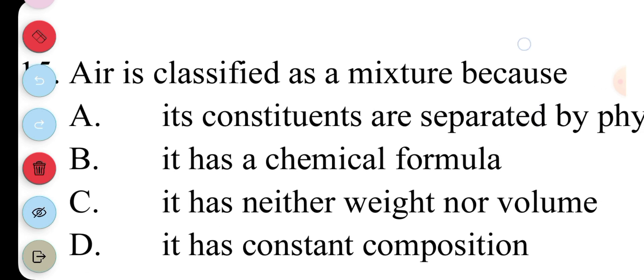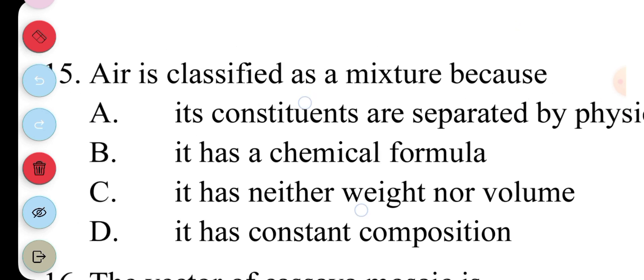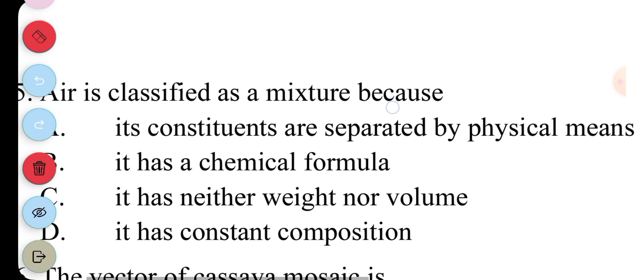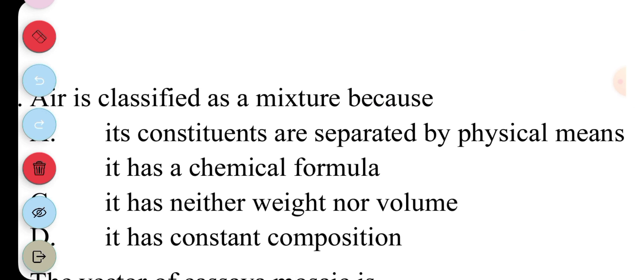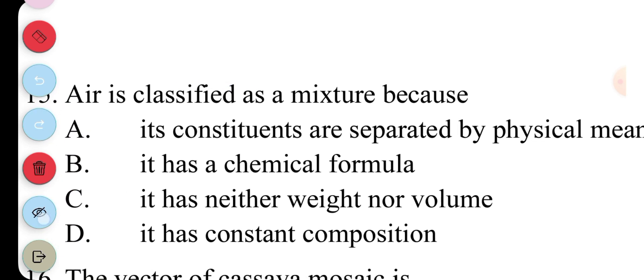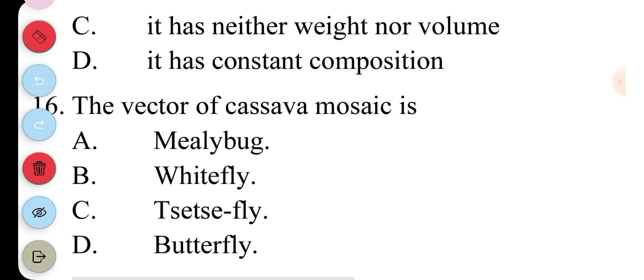15, air is classified as a mixture because A, its constituents are separated by physical means; B, it has a chemical formula; C, it has neither weight nor volume; D, it has constant composition. The answer to question 15 is A, its constituents can be separated by physical means. 16, the vector of cassava mosaic is A, mealybug; B, whitefly; C, tsetse fly; D, butterfly. The answer to this question is B, whitefly.